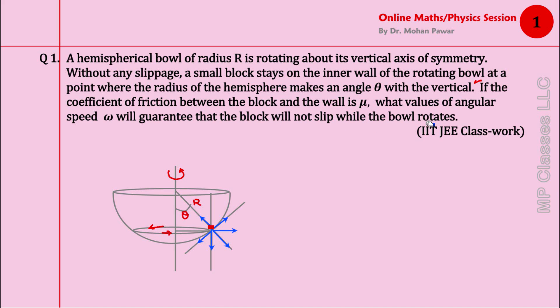While the bowl rotates, in order to understand why the block would slip, consider that ω is 0. We are asked to find what speed ω is required to guarantee there won't be any slippage. Suppose there is zero speed, the bowl is at rest, and if you try to place that mass here, it is going to slide down on its own weight.